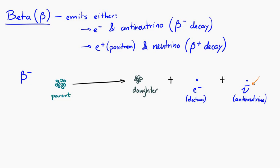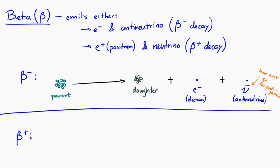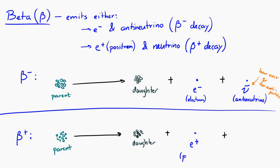Beta plus decay is when you have an unstable parent nucleus that decays into a more stable daughter nucleus by emitting a positron and a neutrino. The positron is represented with e-plus — it's actually the anti-particle of an electron. The neutrino is represented just with the Greek letter nu, without the bar over it because it's not an anti-particle.